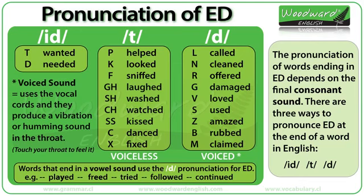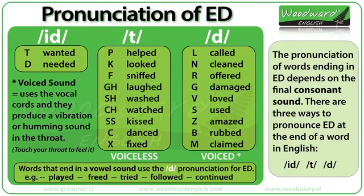If the last letter of the word ends in a voiceless sound — like the P in 'help' — then the ED is pronounced as a T sound. So 'help' becomes 'helped.' It is important to know that we do not add an extra syllable — we say 'helped' (one syllable), not 'help-ed' (two syllables). Let's go through the list: helped, looked, sniffed, laughed — the GH here is pronounced like an F, so it's laughed — washed, watched, kissed, danced, fixed. They all end in a T sound.